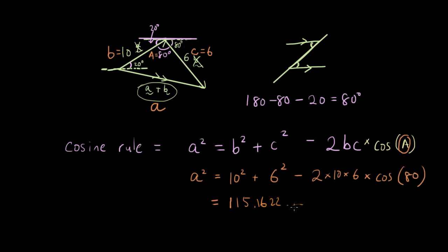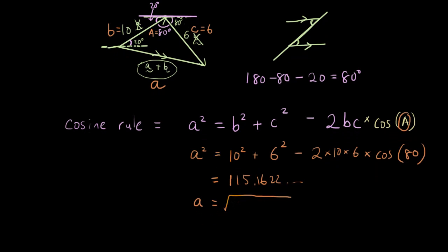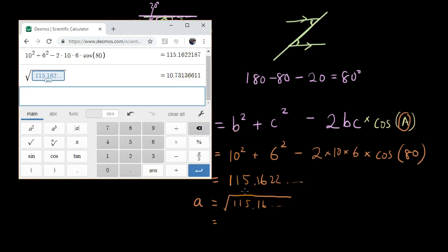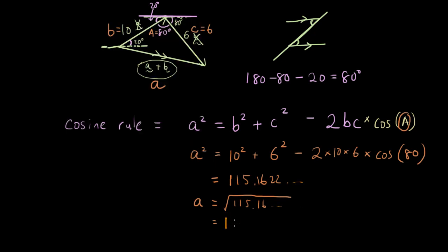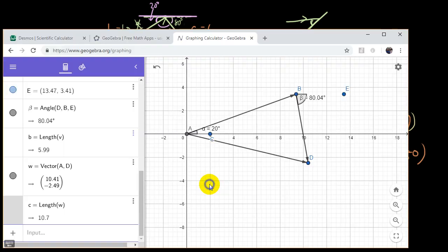Now I'm not going to write all the decimal places after it. But a is simply going to be the square root of all of that. Because you can see we have a squared, not a. So in order to find a, we need to square root it. So square root of that is 10.7314. Round it to 4 decimal places. So just to verify that I have this right. I'm just going to show you a quick diagram in GeoGebra to verify it. A scale diagram.